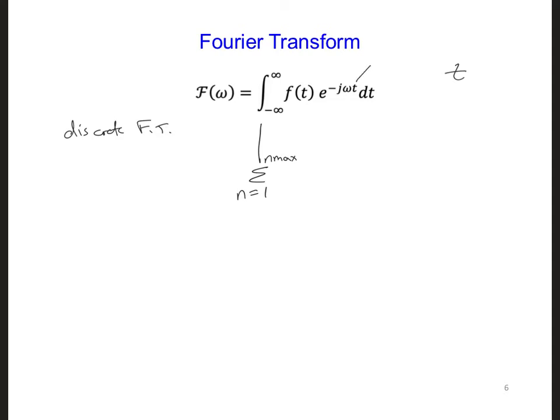So here, t would be n, the number of time steps, times dt, the time step increment. You can check this by making sure the units work out. n time steps times dt, which is in seconds, the number of seconds per time step. And so we're going to get t seconds.